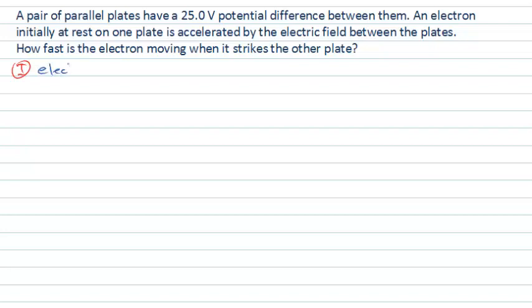So we're going to need to know something about what electric potential tells us. And this electron initially at rest on one of the plates is accelerated by the electric field between the plates, and the question is asking how fast the electron is moving when it strikes the other plate. So electric potential is linked to potential energy and we want to know how fast something is moving when it's changed its electric potential and therefore changed its potential energy.